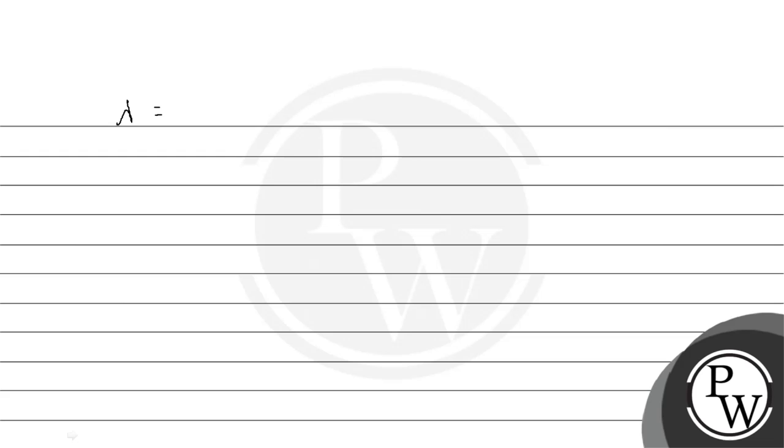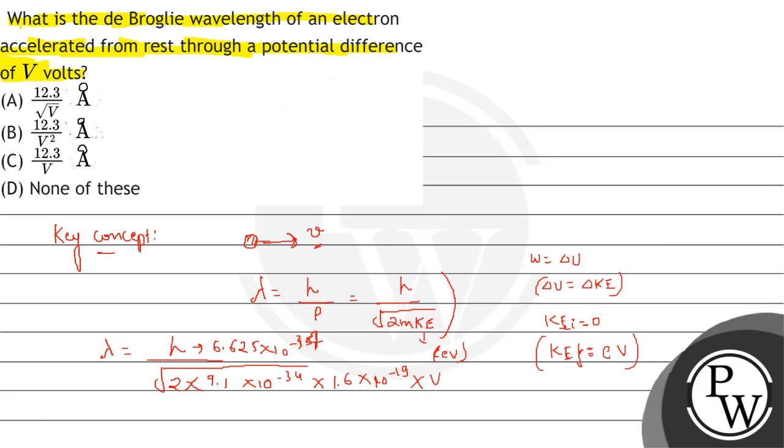Let's check the options. 12.3 angstrom divided by root V. This will be your correct one. I hope you understood it well, best of luck.